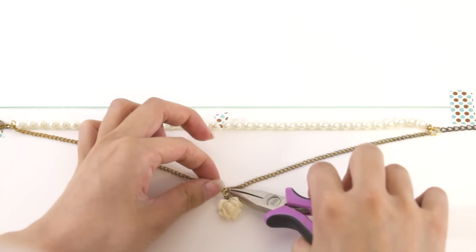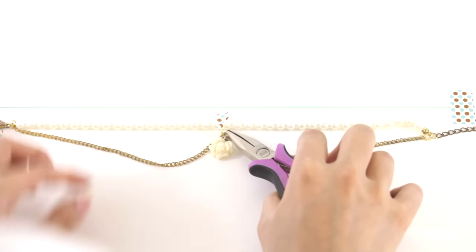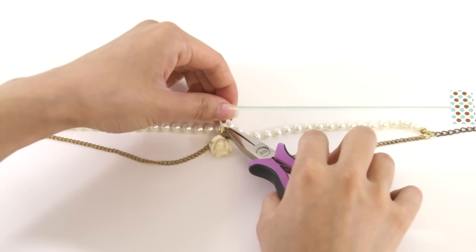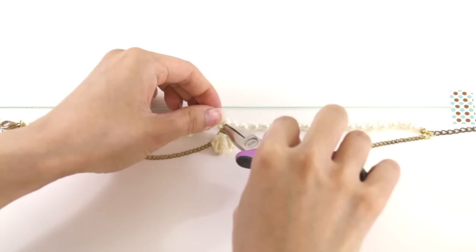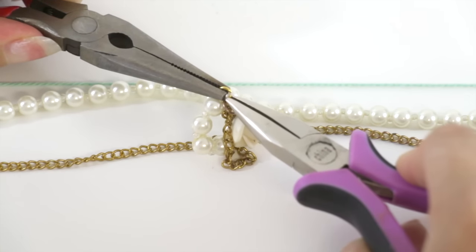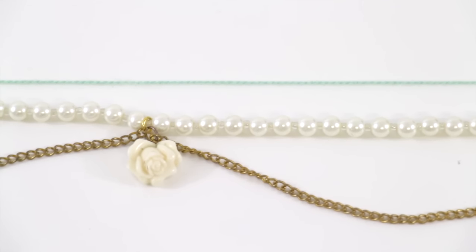If your jump ring is big enough, you're also going to want to insert the string of pearls, however, if it is not, do not worry, just close off that jump ring and attach another one to the pearls and the one you attached before. After that, you are done with the choker.